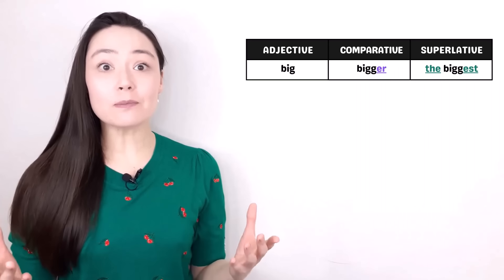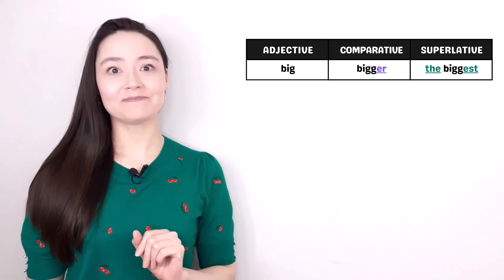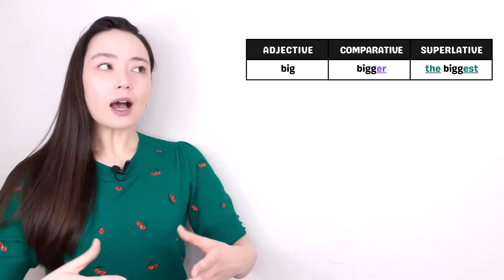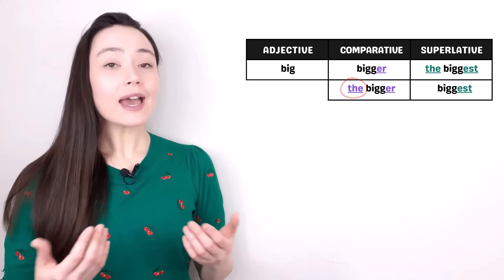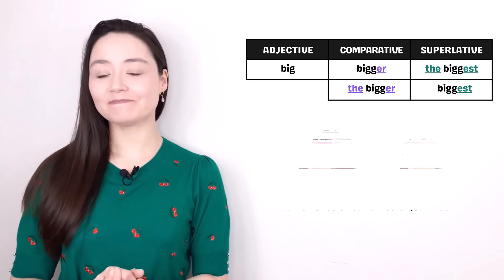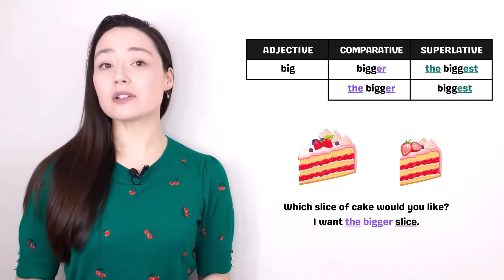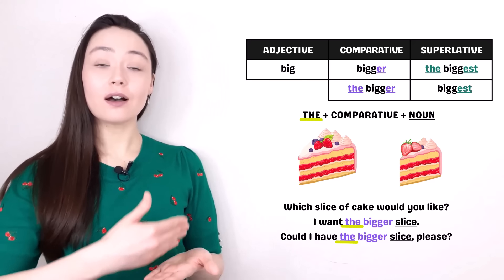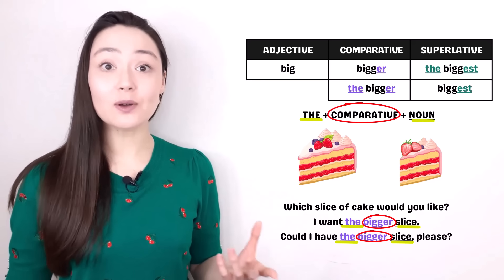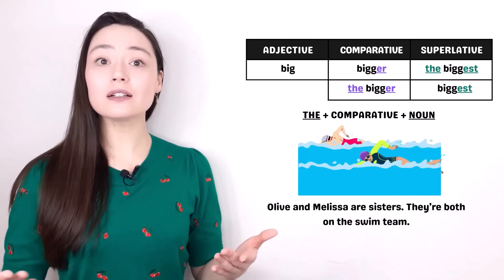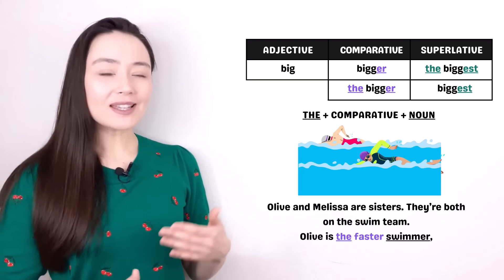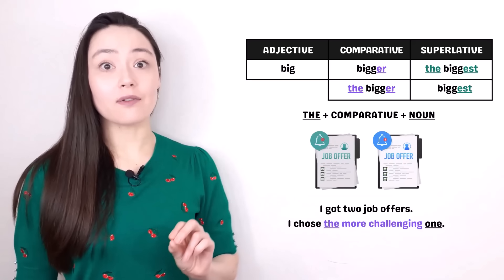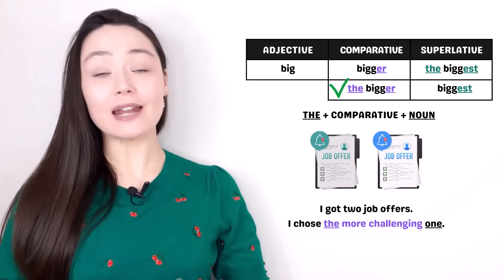There's been a lot of information in today's lesson, but let's look at two more things before the test. You know: big, bigger, the biggest. But I want to tell you about using 'the' with a comparative and not using 'the' with a superlative. Which slice of cake would you like? Could I have the bigger slice, please? We can use the structure 'the + comparative + noun' when comparing two things. Olive and Melissa are sisters — they're both on the swim team. Olive is the faster swimmer, but Melissa is the better student. I got two job offers — I chose the more challenging one.